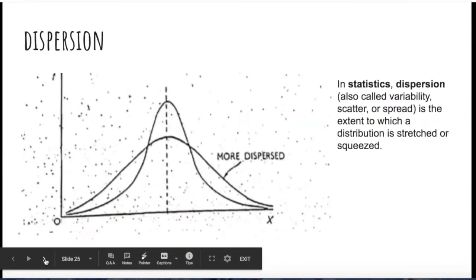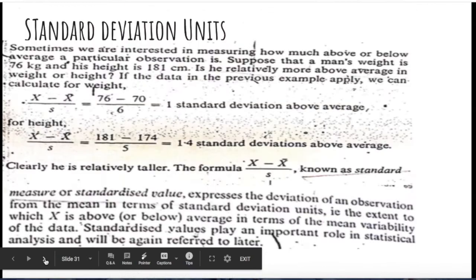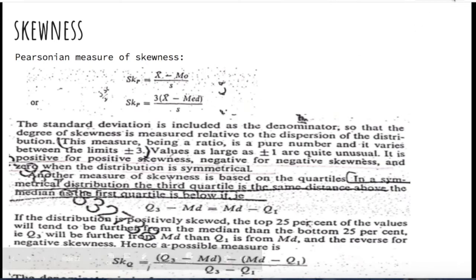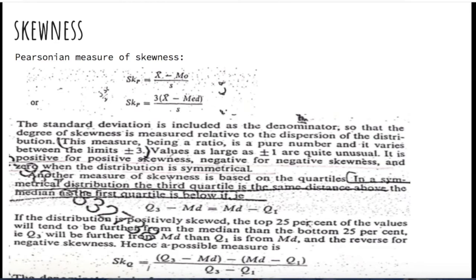Our data can have positive skewness, negative skewness, and we can measure the extent of skewness using formulas. The first measure we are going to study in this lecture is the Pearsonian measure of skewness. There are two formulas you can use to measure skewness.